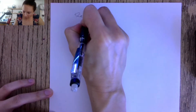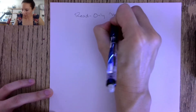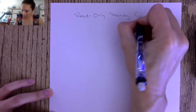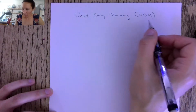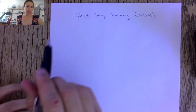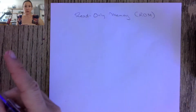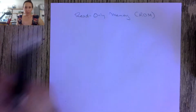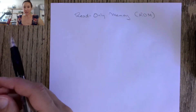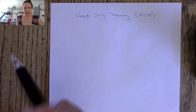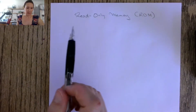Today I want to explain what read-only memory is. This is abbreviated ROM. ROM is a memory device in which permanent binary information is stored. The information gets burned onto this device and it stays on there even after a power cycle — even after the device has been turned on and off.